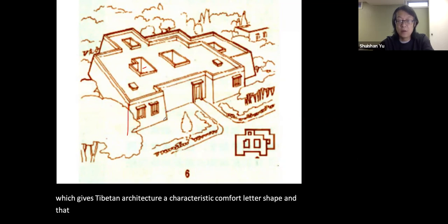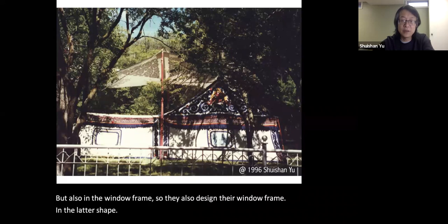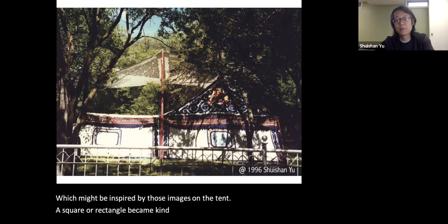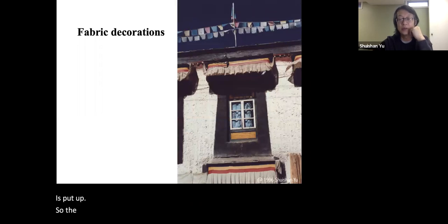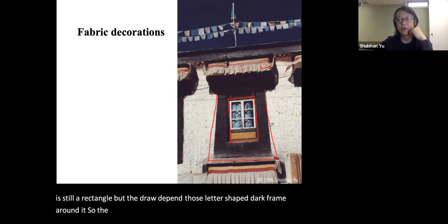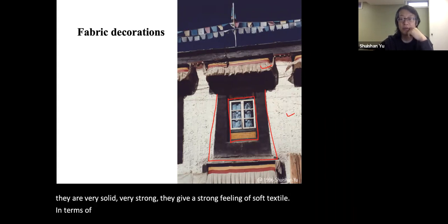That letter shape appears not only in the wall but also in the window frame — they designed window frames in the letter shape, possibly inspired by the images on the tent. A square or rectangle becomes letter-shaped when the tent is put up. So they developed a lot of decoration using textile. Here the window itself is still a rectangle, but they paint a letter-shaped dark frame around it. The general impression of Tibetan architecture, though very solid and strong, gives a strong feeling of soft textile in terms of surface decoration and the actual use of textile for decoration.